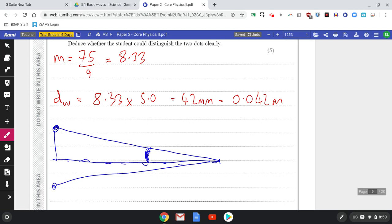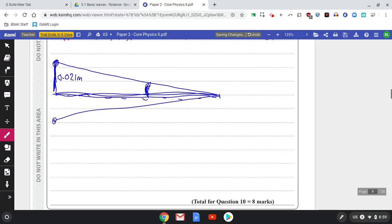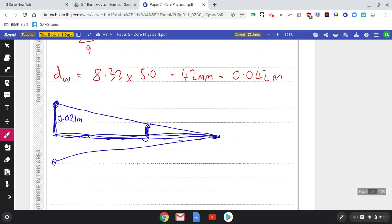So this distance here is half of 42 millimeters, so this distance here is 0.021 meters. This distance here, that's the distance the student is from the wall, so that's 4.5 meters. So what's this angle here?